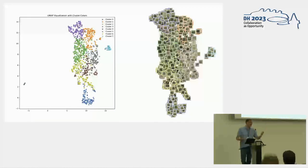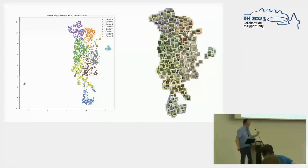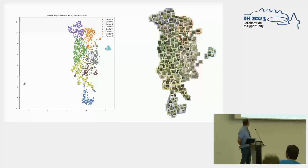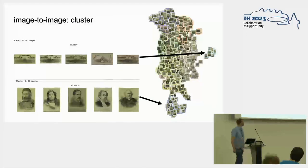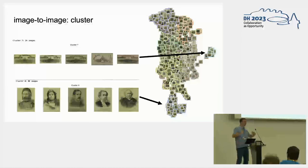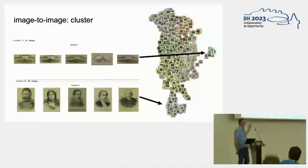We can also use these embeddings for an image-to-image clustering task, as we already saw with Eleonora and previously with Fabian and Leo. I used k-means to cluster the CLIP embeddings and then plotted them with different colors in a UMAP visualization. Here I have the thumbnails, and you can see that CLIP is very good at recognizing relevant clusters of visual concepts in our dataset. For example, it has recognized all these famous and important men in the Illustrated London News, and also another cluster which is basically all the headers of the Illustrated London News.